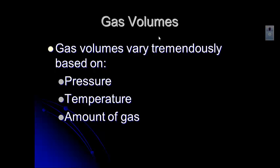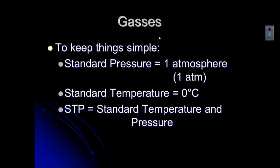Gas volumes can change a lot based on pressure — if you increase the pressure on a gas, you decrease the volume. Also temperature: if you increase the temperature of a gas, it gives you a larger volume. To make life easier, we define a standard. Standard pressure is one atmosphere, which is typical atmospheric pressure, and standard temperature is zero degrees C. When we talk about gases, it's called STP — standard temperature and pressure — and that just takes two variables out of the equation.